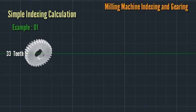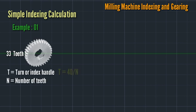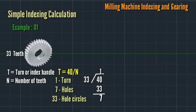Turn equals 40 divided by N, so 40 divided by 33, that is 1 and 7/33. So equal to 1 turn, then 7 holes in 33 hole circles. For selection of indexing plates, we'll use an indexing plate with 33 holes.